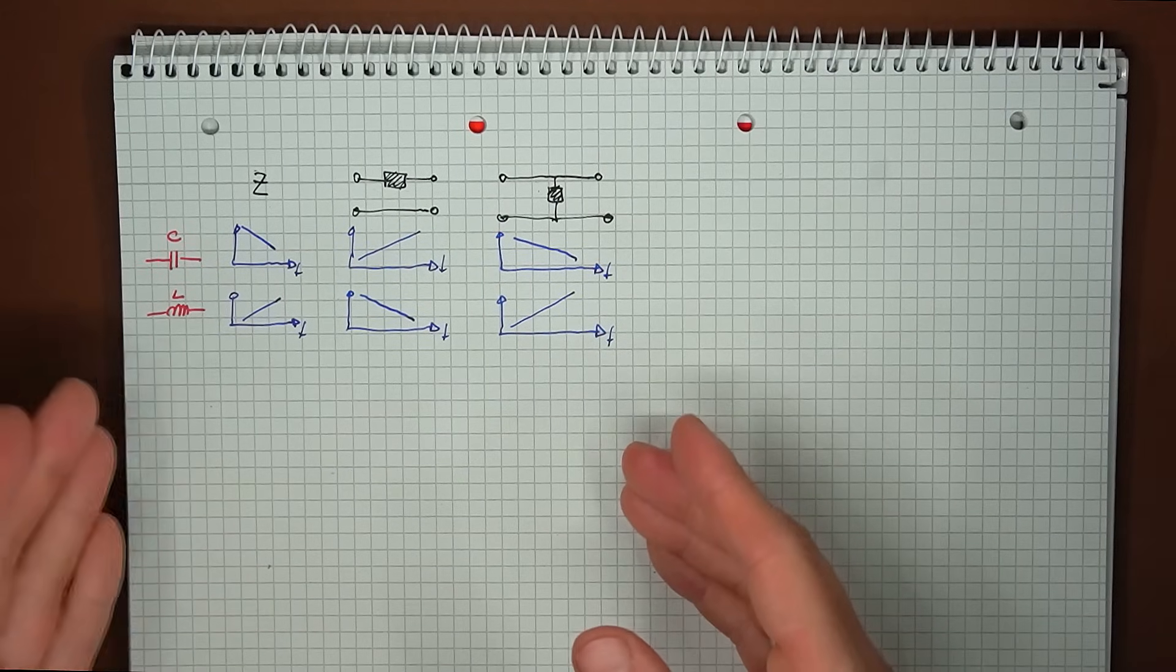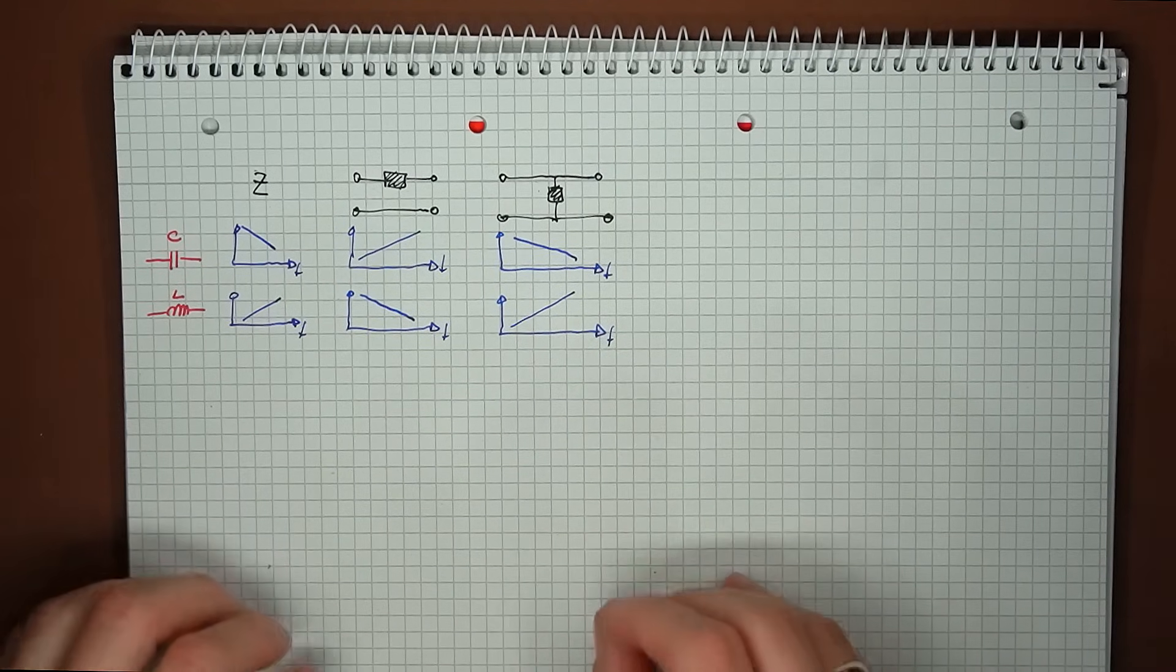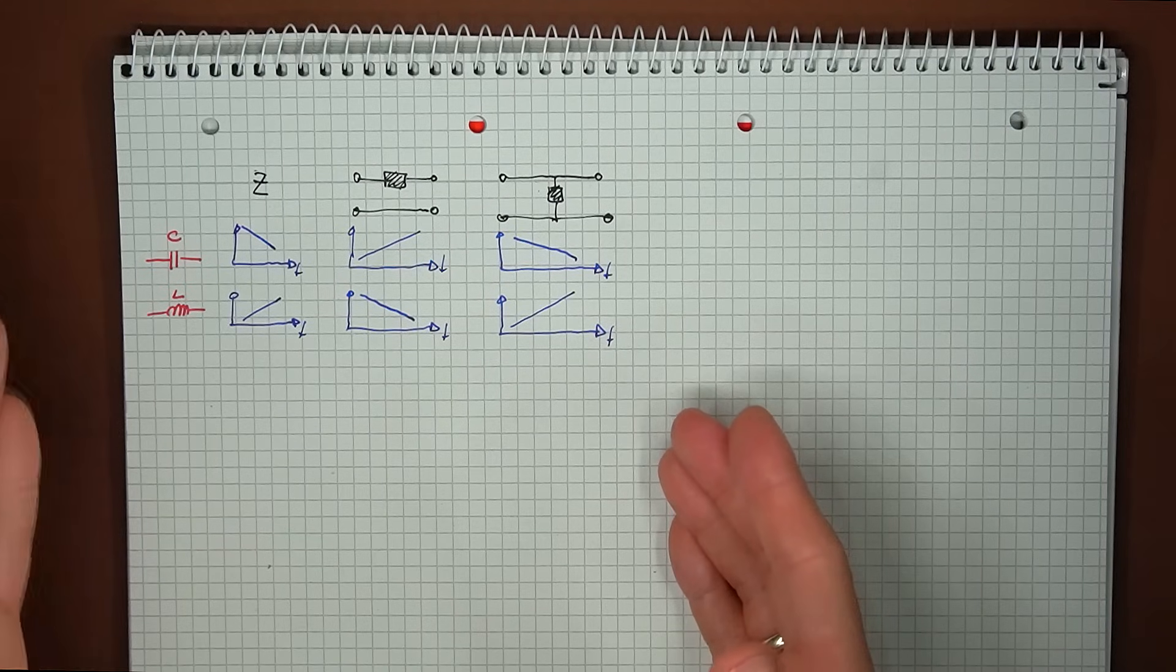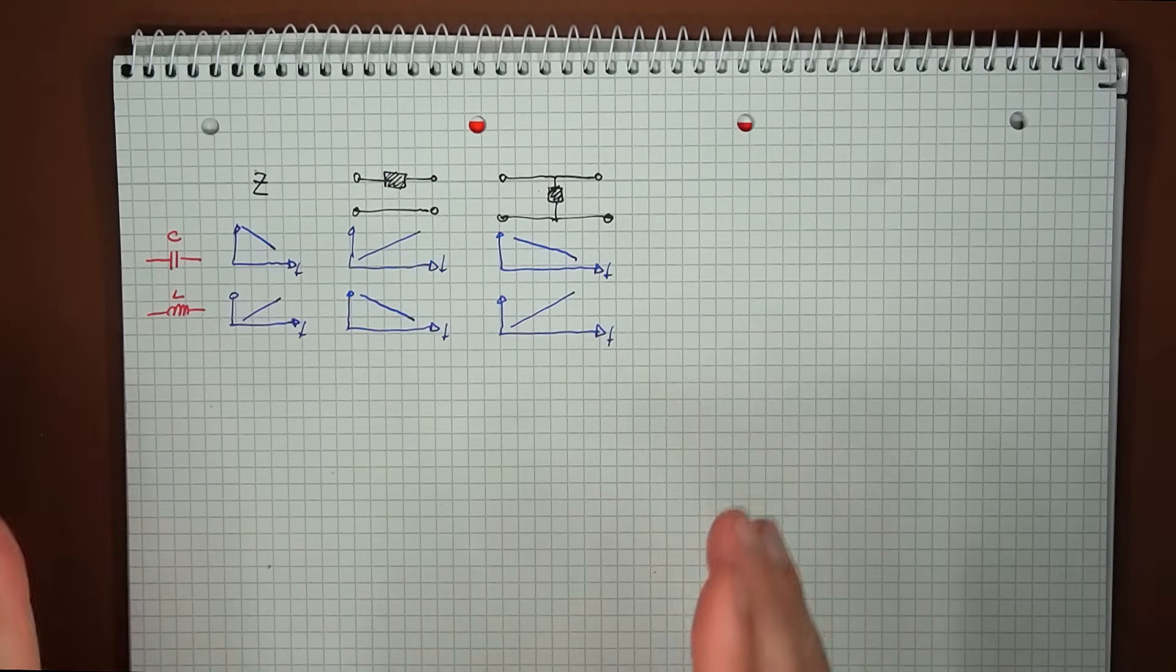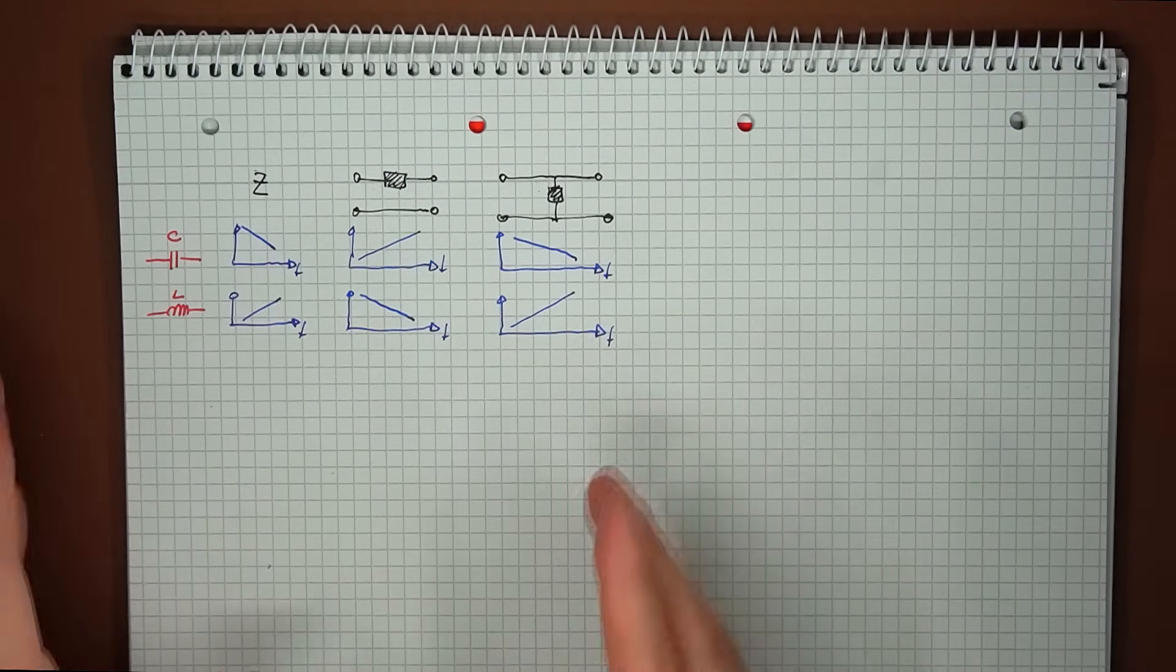The inductor is more or less the same, only in reverse. So based on these behaviors, standalone inductors and capacitors are mainly used in high and low-pass filters.